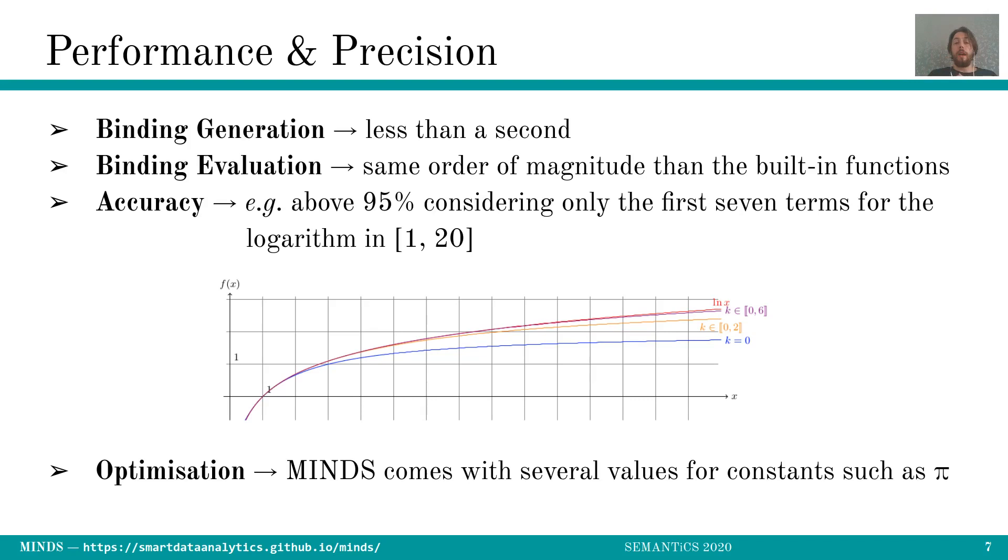In terms of accuracy, obviously when you use the decomposition, when you know that your formula is implying decomposition in series, then obviously the more terms you are allowing MINDS to compute in the bindings, the more precise you become. So the more you push, the better it is. But you already have 95% of accuracy only using the first seven terms, so it's quite good actually.